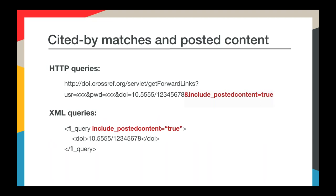I also want to mention how we handle cited-by matches for our newest content type, officially called posted content, which encompasses preprints and other preprint-like objects. You may or may not want these in your cited-by results. So instead of including them by default and having you filter them out, we decided by default we won't give you matches from preprints citing your content. You can opt to include those results by adding an include_posted_content parameter in your HTTP queries or in the XML you use to query.